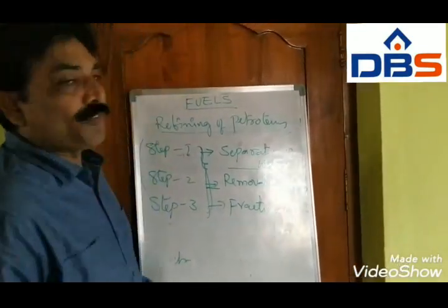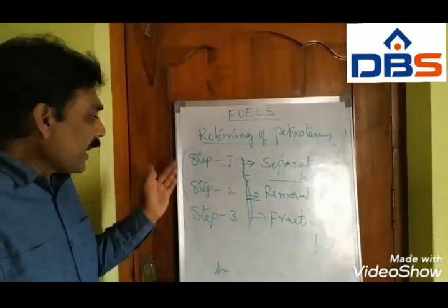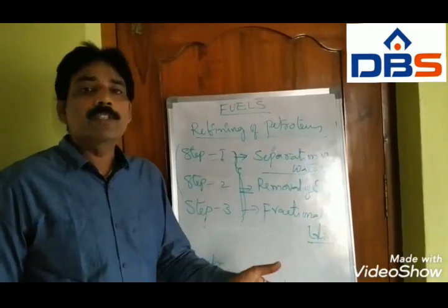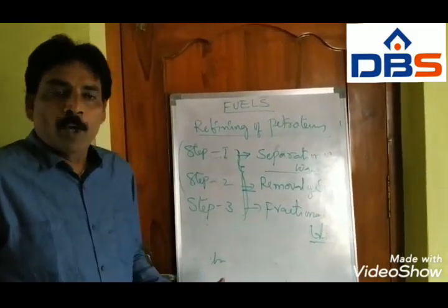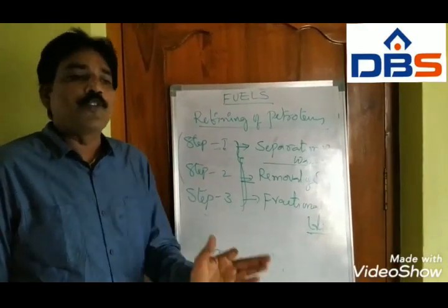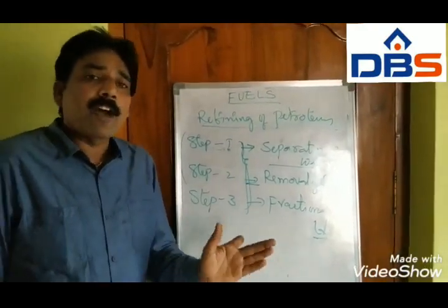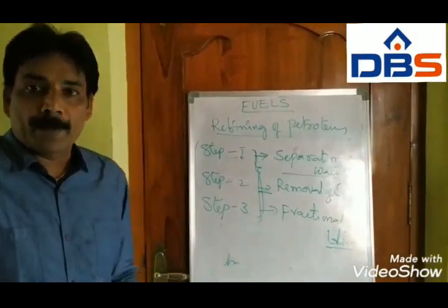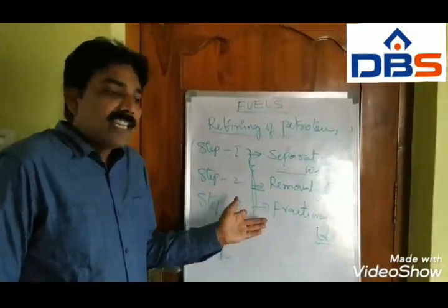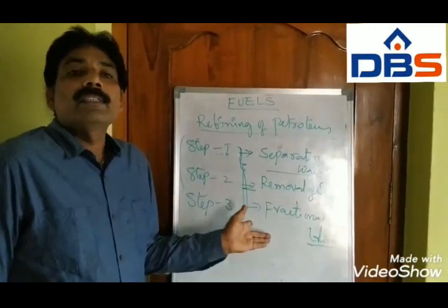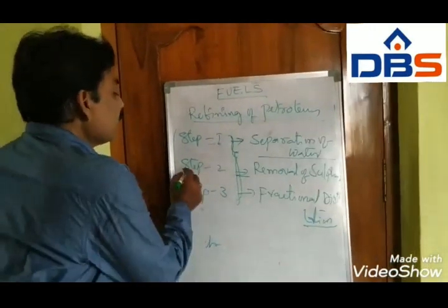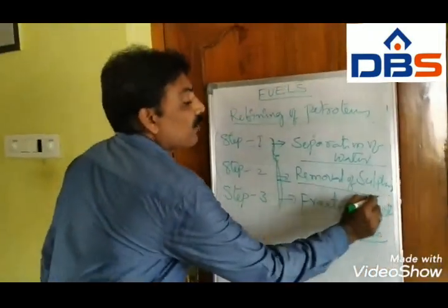Step two: removal of sulfur. The remaining crude oil is treated with cupric oxide. Cupric oxide reacts with the sulfur compound to form a precipitate of copper sulfate. That precipitate of copper sulfate is easily removed by the filtration process. That is step two, removal of sulfur.